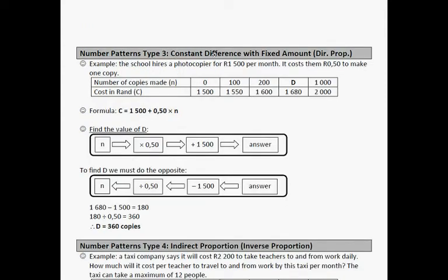Number pattern type 4: constant difference with a fixed amount. So the number of copies made, and the cost per rand. Remember the formula was 1,500 plus 0.5 times n. So what we did is we took n, we timed it by 0.5, and then we plused 1,500 rand to get the answer. Now we start with the answer. First, we're going to subtract 1,500. So we take 1,680 minus 1,500, and that gives us 180 rand. And then the opposite of multiplying with 50 cents, or 0.5 rand, is dividing by 0.5, and that gives us 360. So D is 360 copies.